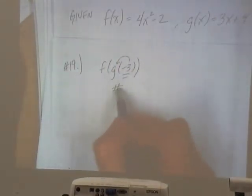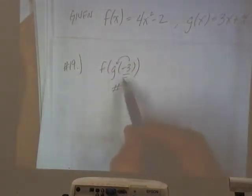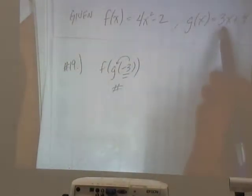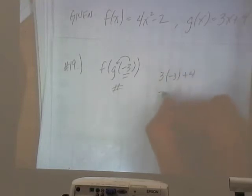We'll take that number and then plug it into the f function. So if we plug negative 3 into g, we get 3 times negative 3 plus 4. Negative 9 plus 4, that gives us negative 5.